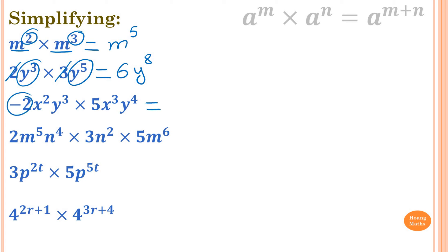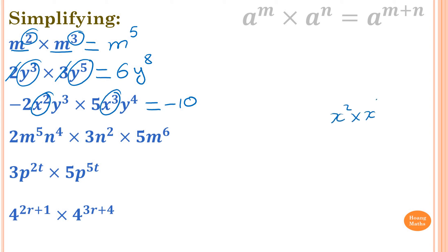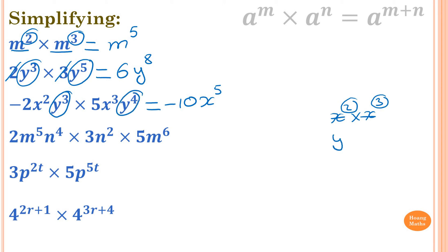This one: minus 2 times 5 is negative 10 — write the number down first. Now deal with x: x squared times x to the power of 3, both same base, so we add the indices. 2 plus 3 is 5, so x to the power of 5. Then for y: y to the power of 3 times y to the power of 4, both same base, so 4 plus 3 is 7, giving y to the power of 7. So the answer is negative 10x⁵y⁷.